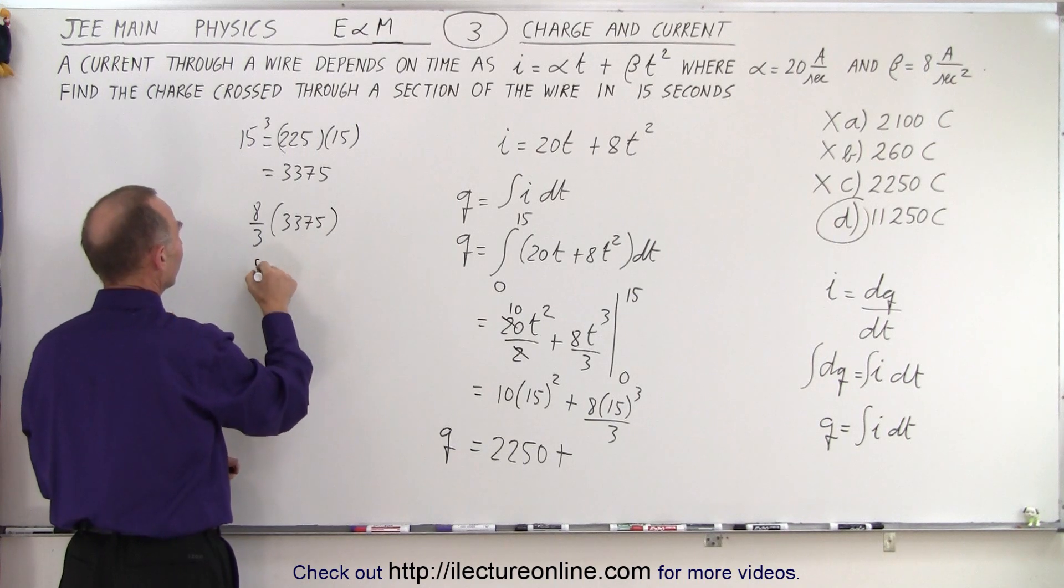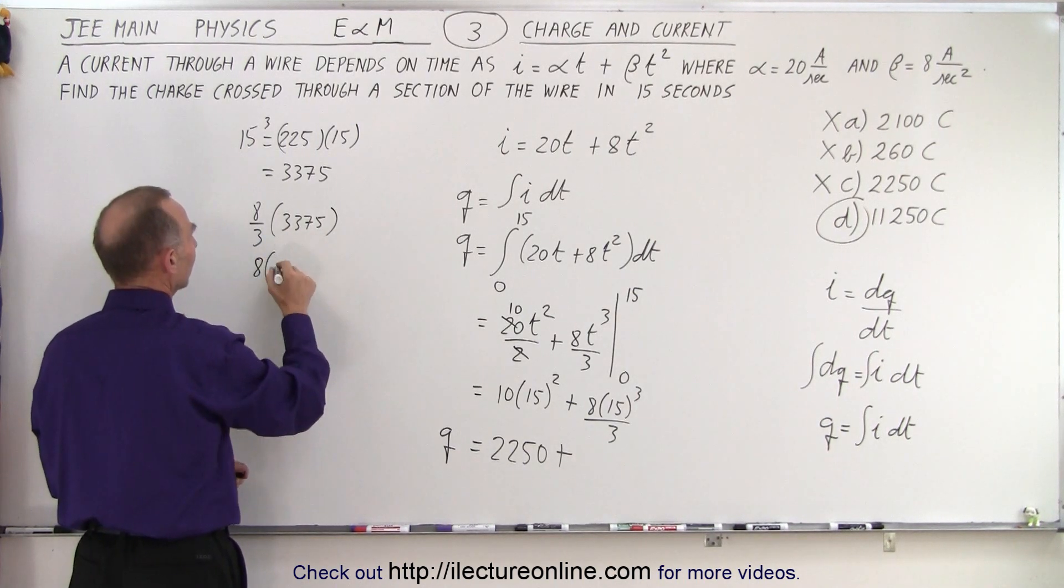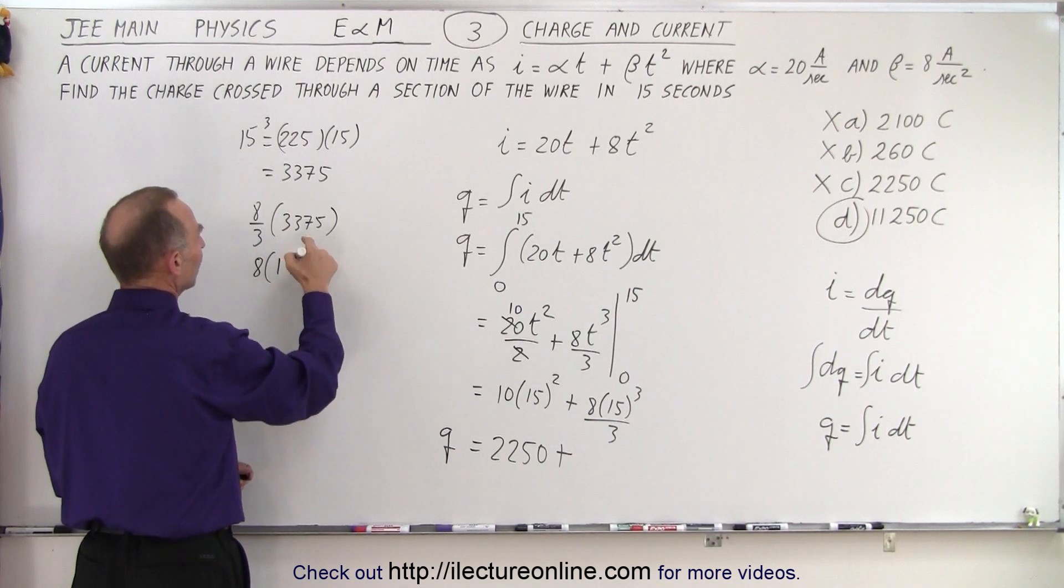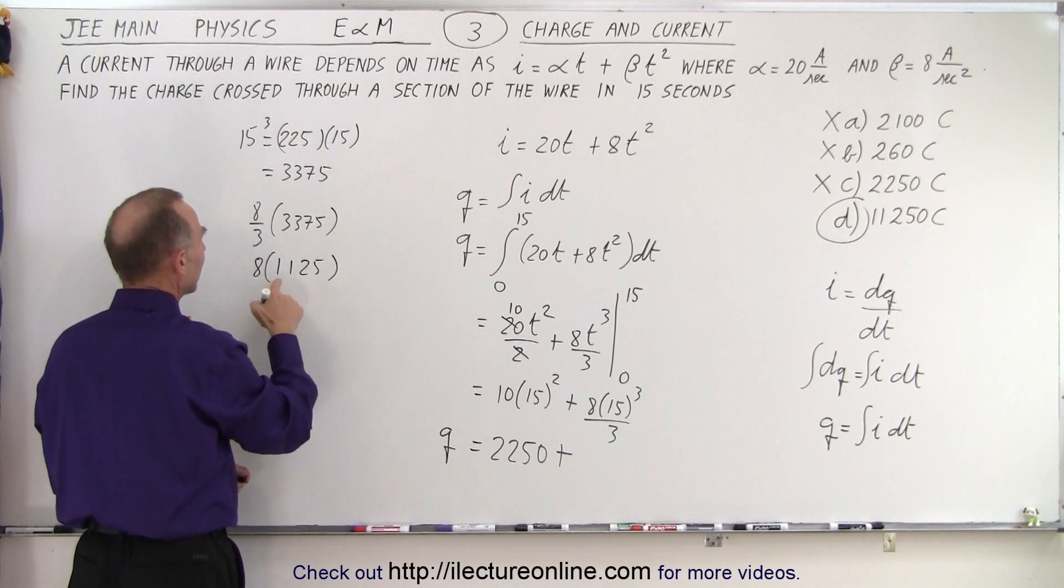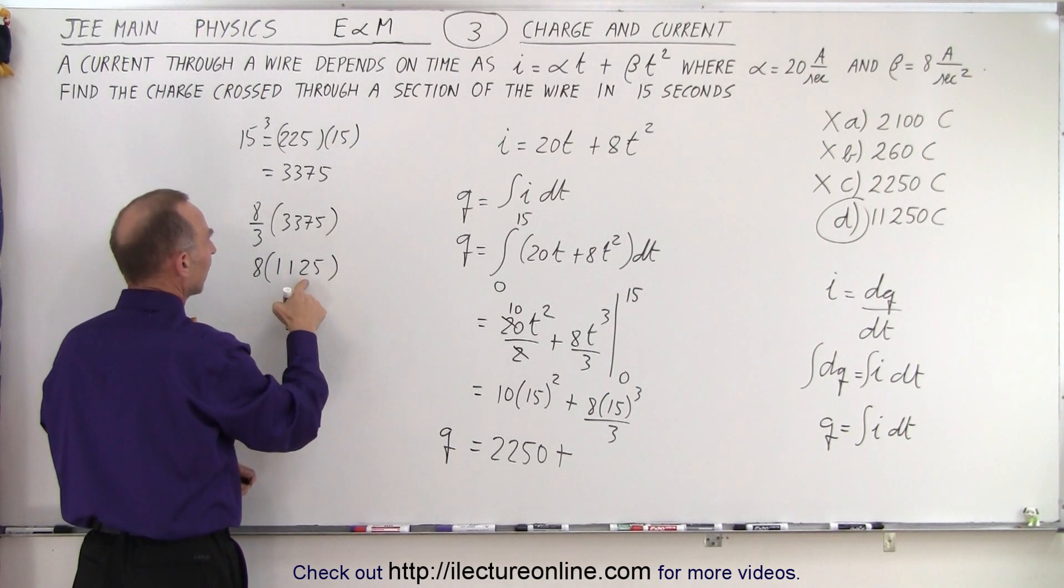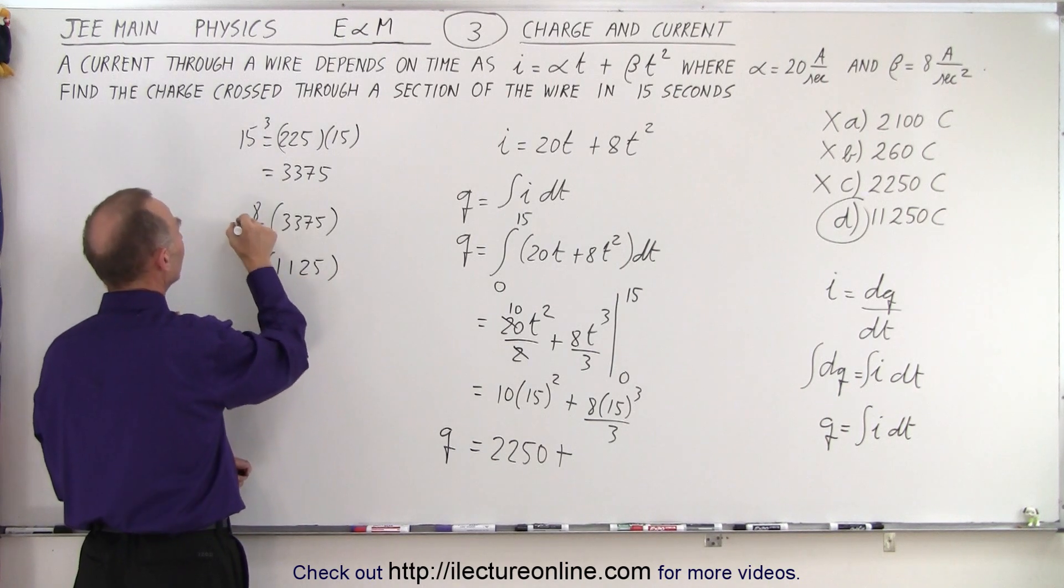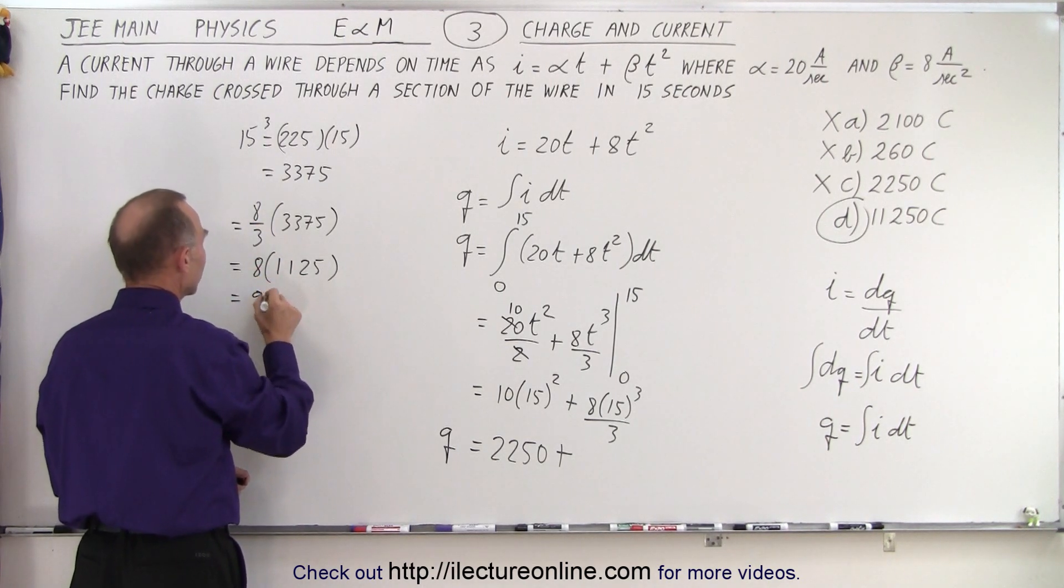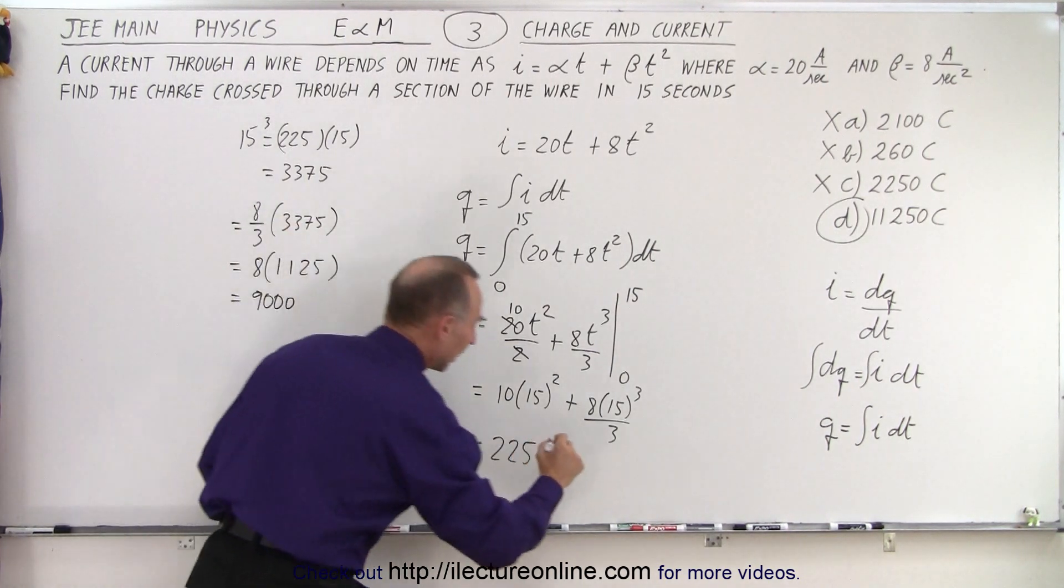Then we multiply times 8 over 3, so now we take 8 over 3 times 3375. 3 goes into 75 twenty-five times, and 8 times that is 9000. So this is equal to 9000.